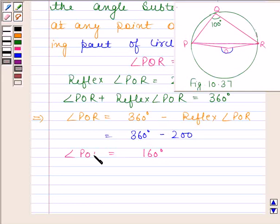And this is equal to 360 degrees minus 200, and this comes out to be 160 degrees. So, angle POR is equal to 160 degrees. This angle is of 160 degrees.